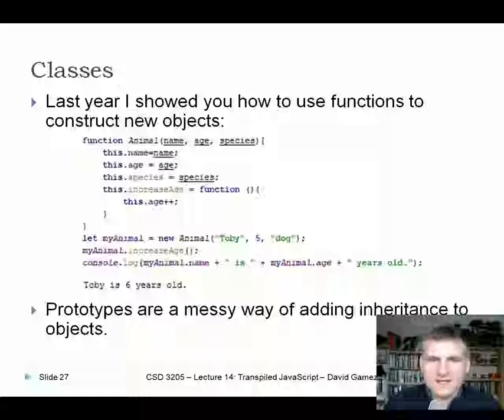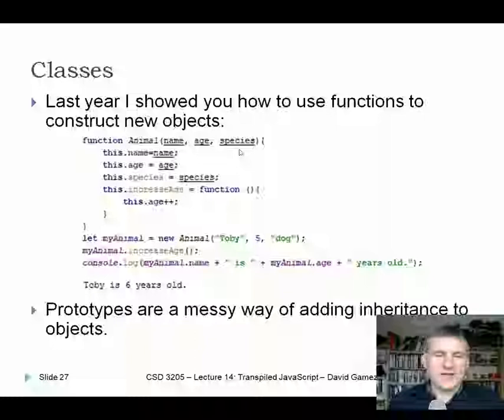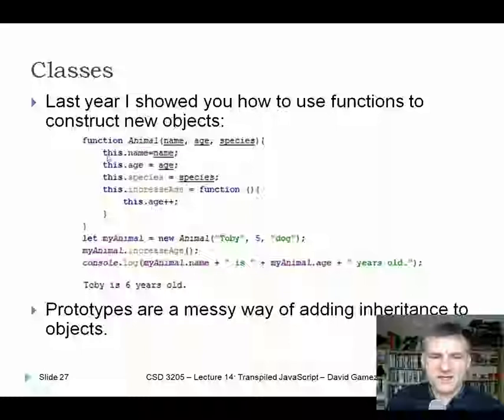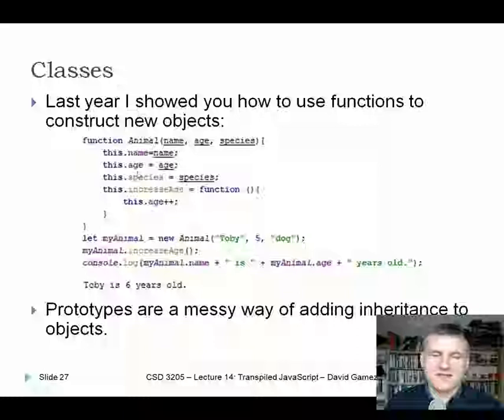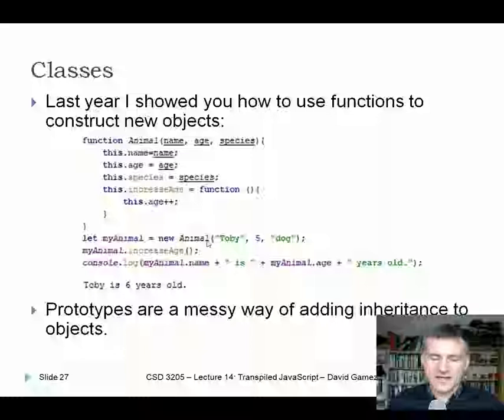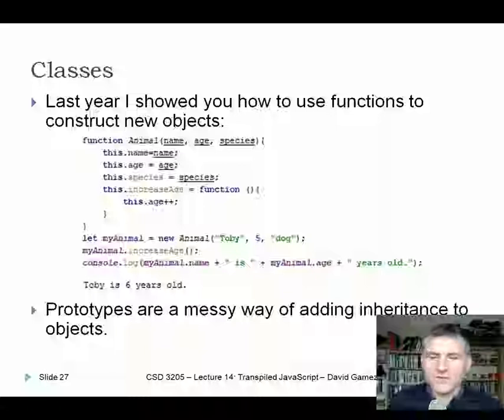Classes have now been introduced to JavaScript. Previously, you could create objects using constructor functions and add properties with this.name, this.age, this.species, then add functions via prototypes to achieve inheritance. But that approach was really awful and clunky — the prototype way of doing inheritance in JavaScript was unpleasant. Fortunately, they've now introduced classes to JavaScript, providing a much cleaner, nicer way of writing object-oriented code.